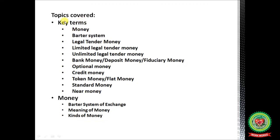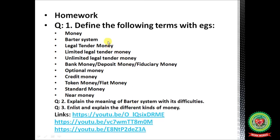We have discussed the key terms today: barter system, legal tender money, limited legal tender money, unlimited legal tender money, bank money or deposit money or fiduciary money, optional money, credit money, token money or flat money, standard money, and near money. Under money, we have discussed the barter system of exchange, meaning of money, and kinds of money. Hope you all have understood the topics.